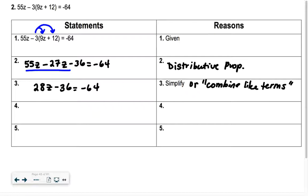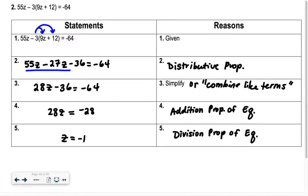So as I combine those, I get 28z minus 36 equals negative 64. Now what? Yeah, Cam? Add 36. So when I add 36, I get 28z equals negative 28. So we add into both sides, so it's the addition property of equality. And then our last step is divide by 28, divide by 28, so we get z equals negative 1. And that's the division property of equality.